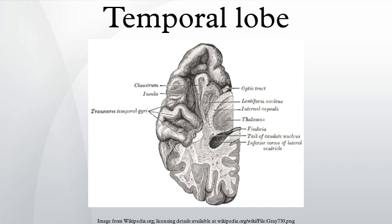Structure: Medial temporal lobe. The medial temporal lobe consists of structures that are vital for declarative or long-term memory. Declarative or explicit memory is conscious memory divided into semantic memory and episodic memory. Medial temporal lobe structures that are critical for long-term memory include the amygdala, brainstem, and hippocampus.